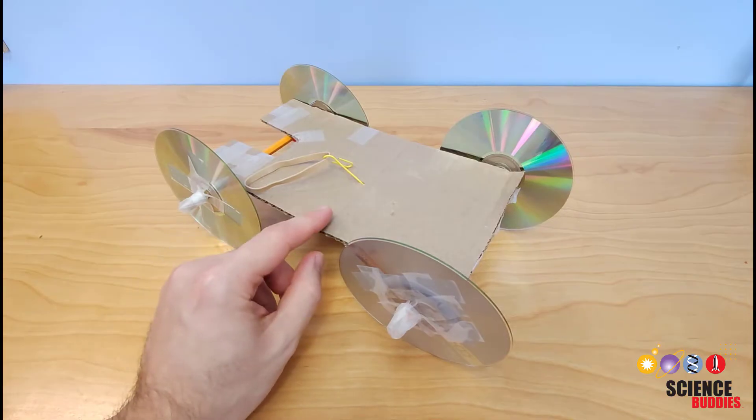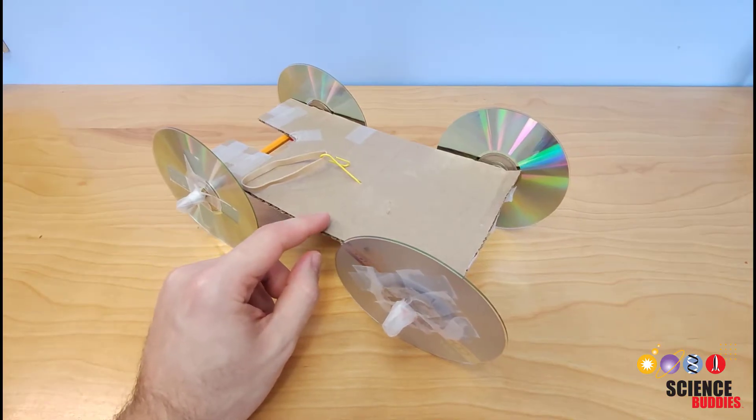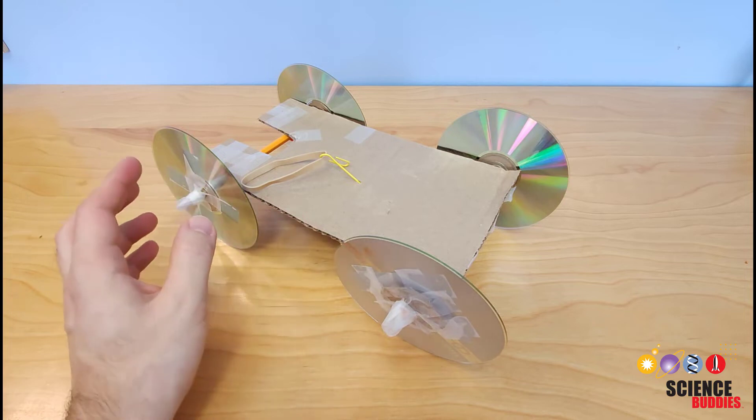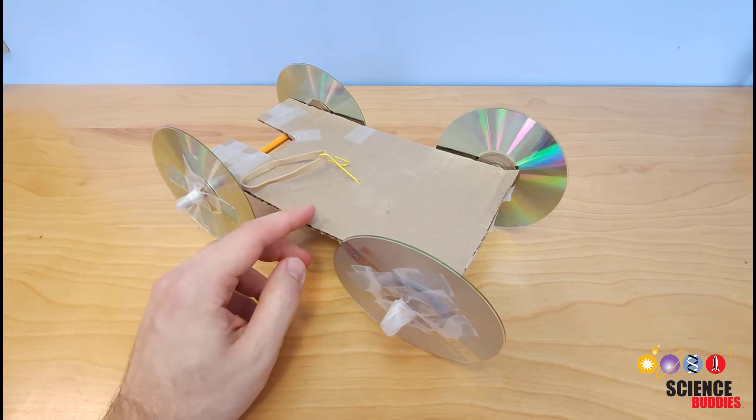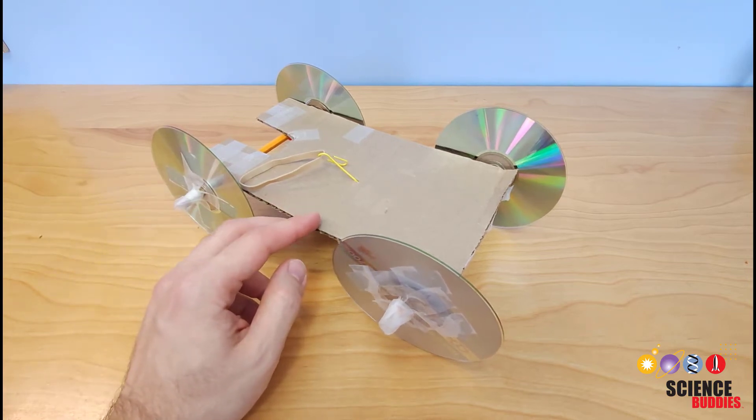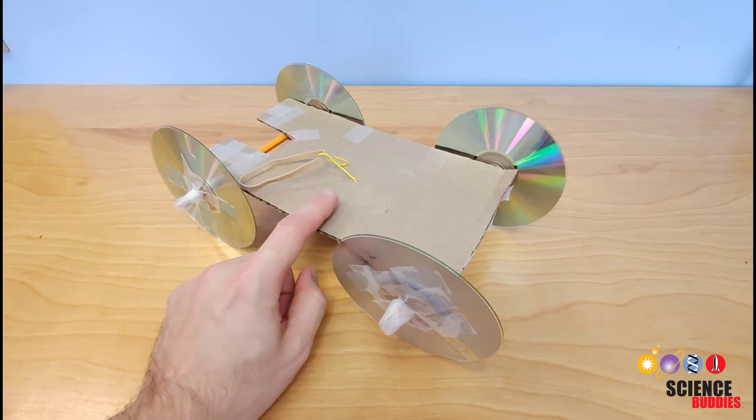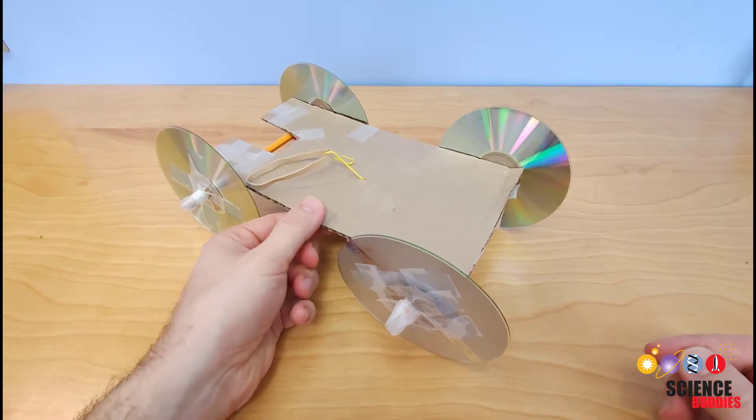Next you need to count all of the materials used to build your final car. So if you have other scrap materials that you didn't wind up using or materials that were used in an earlier prototype, you do not need to count those. You only count the materials used in your final design.